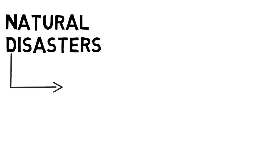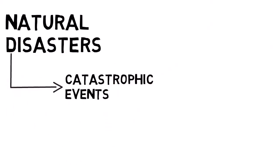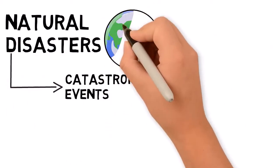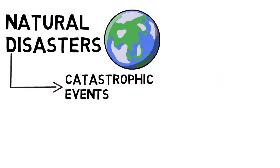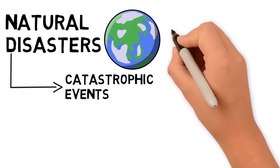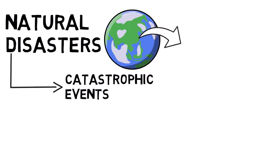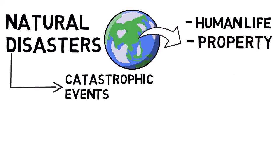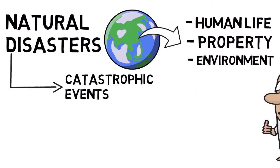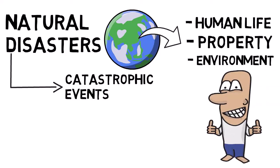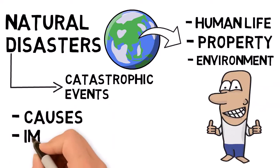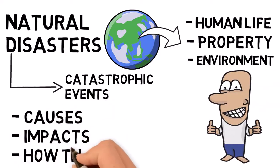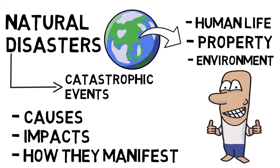Natural disasters are catastrophic events caused by natural processes of the Earth. They can have devastating effects on human life, property, and the environment. Let's explore different types of natural disasters, explaining their causes, impacts, and how they manifest.